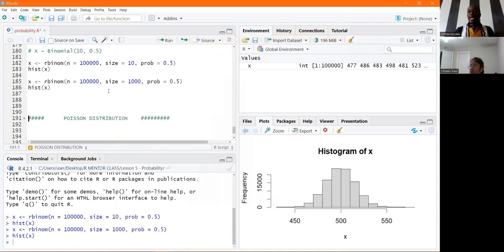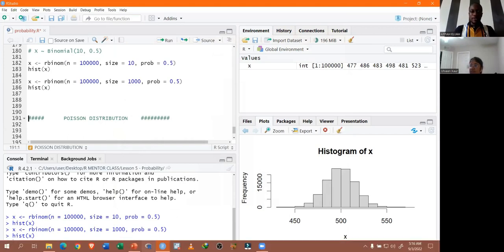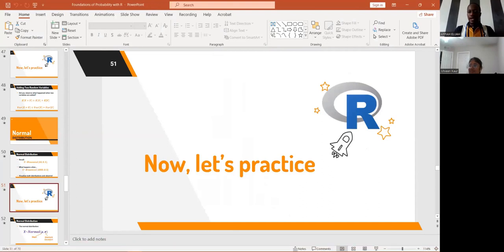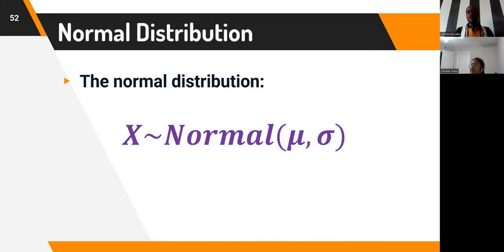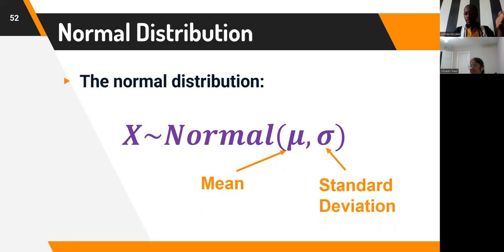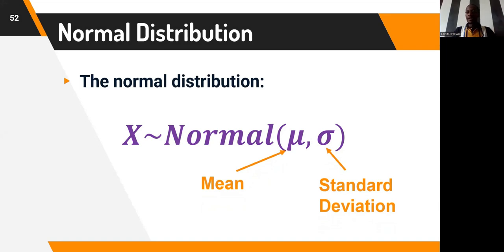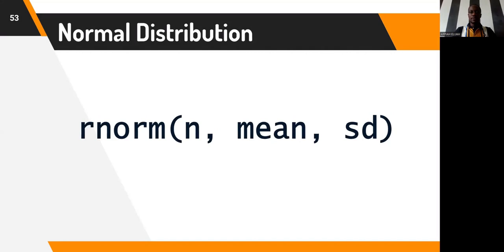The idea that with a large sample size — with 1,000 or more coin flips — we approach a normal distribution. We would like to go back to the slides and get a refresher about what this normal distribution is all about. The normal distribution is described by two parameters: the mean and the standard deviation. We have the normal distribution, and in parentheses we have the mean represented by the Greek letter mu and the standard deviation represented by the Greek letter sigma.